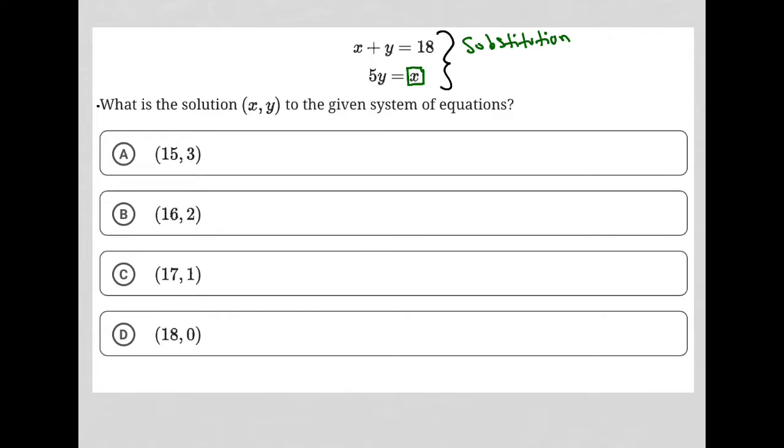So how do we use substitution? I take what I know that isolated variable is equal to—in this case, x equals 5y—and then I replace that same variable in the other equation with what I know it's equal to.